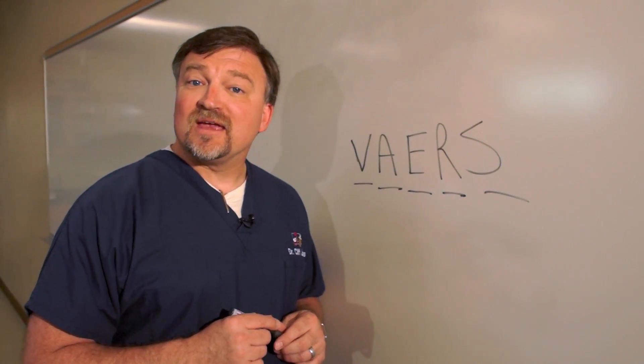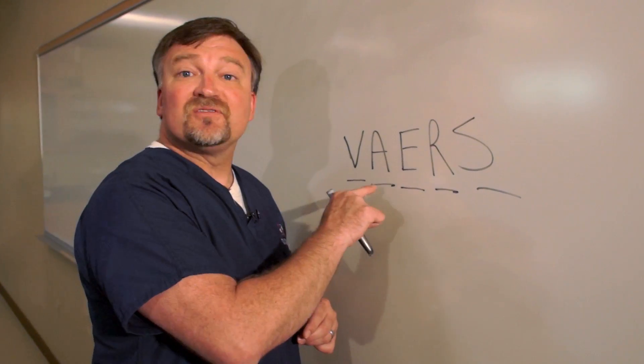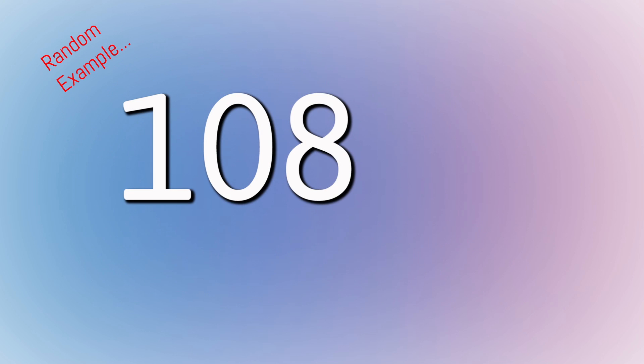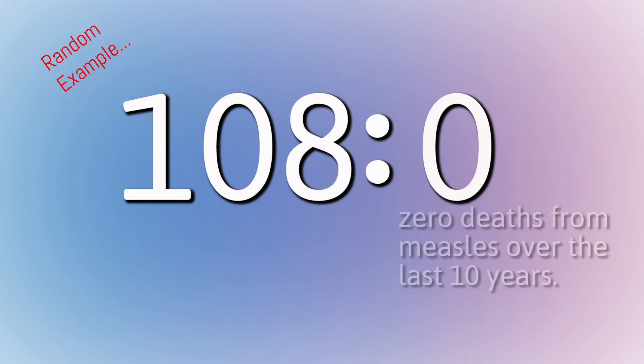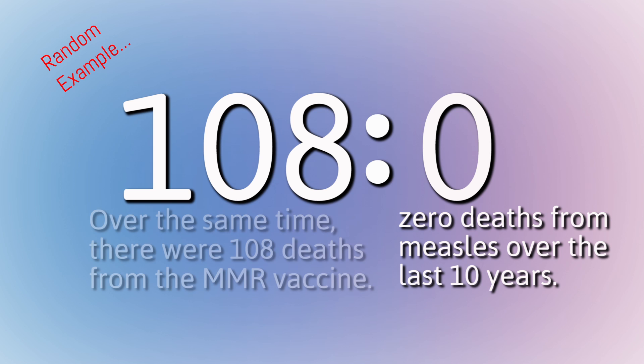One of the common things that you'll see in reference to the VAERS is the number 108 to 0. They're saying that there were zero deaths from measles in the last 10 years. But over that same period of time, there were 108 deaths from the MMR vaccine.